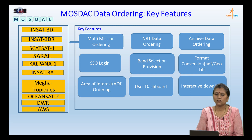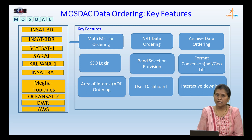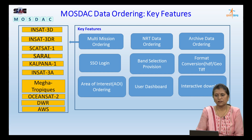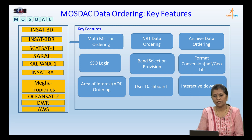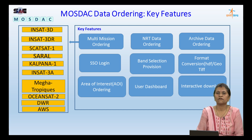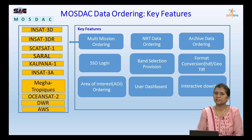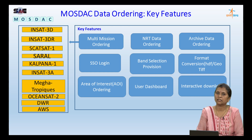Coming to MOSDAC data ordering: first I would like to inform that this data is available free for research purposes. We have data products from 8 meteorological missions: INSAT-3D, INSAT-3DR, RISAT-1, Suomi, Kalpana-1, INSAT-3A, MEGHA-TROPIQUES, and OCEANSAT-2, Doppler weather radar, and AWS. MOSDAC data ordering is a multi-mission data ordering system which allows ordering data from multiple missions and payloads. It also provides ordering of near real-time data as well as archive data sets.